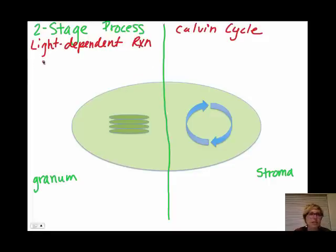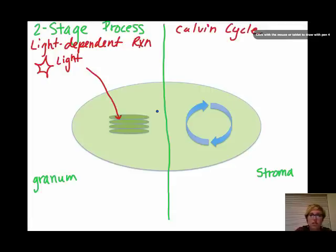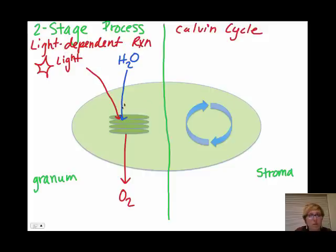So, when we look at this light-dependent reaction, of course we're going to need light. Light is received by pigment found in the membrane of thylakoids called chlorophyll. And that chlorophyll is awesome at absorbing this light and concentrating its energy to break apart water. And as a waste product of this process, we get oxygen, which we breathe.